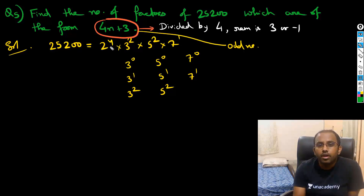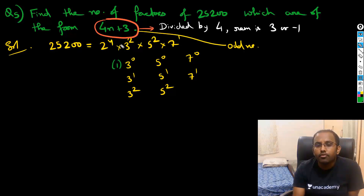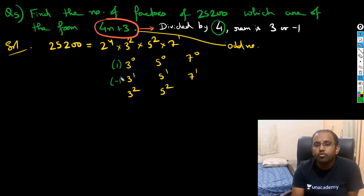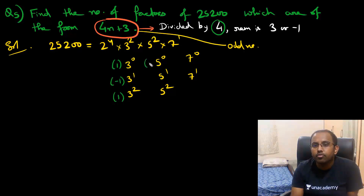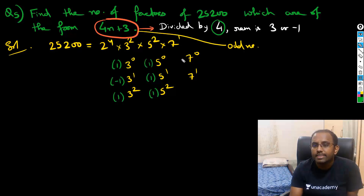Just write the remainder when each term is divided by 4: 1 divided by 4, remainder is 1. 3 divided by 4, remainder is minus 1. 3 squared divided by 4, remainder is 1. 5 raised to 0 divided by 4, remainder is 1. 5 divided by 4, remainder is 1. 5 squared divided by 4, remainder is 1. 7 raised to 0 divided by 4, remainder is 1. 7 divided by 4, remainder is minus 1.